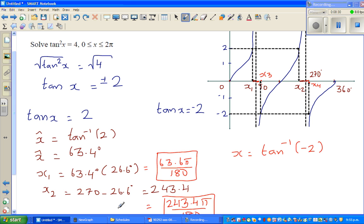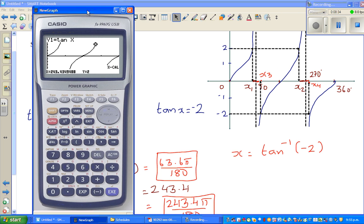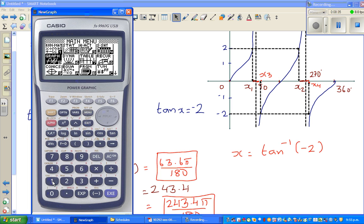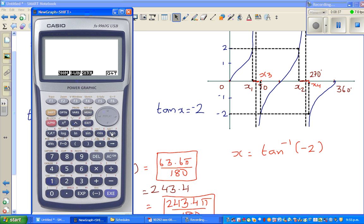So x is tan inverse of negative 2. Let's use a calculator. Shift tan inverse of negative 2. I'm making a guess this should be 90 plus 26.6. Let's see. Minus 63, that is this angle. Calculator is giving you this angle, minus 63. So if you go 360 minus 63.4 will give you 296.6.